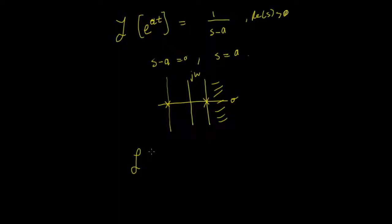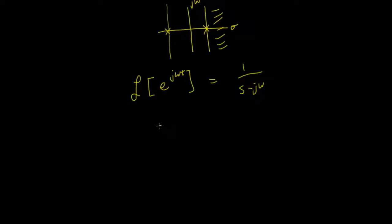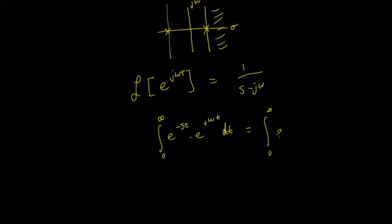Now we can also choose the pole position with respect to the j omega axis. If we look at the Laplace transform of e to the j omega t, that's going to equal 1 upon s minus j omega. We can show this quickly: the integral from 0 to infinity of e to the minus st times e to the j omega t dt equals the integral of e to the minus (s minus j omega) t dt, which gives us 1 upon s minus j omega.